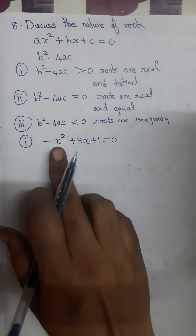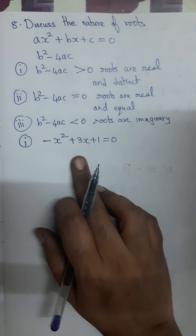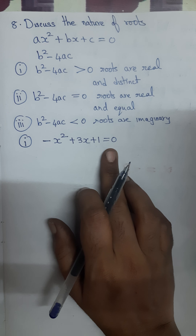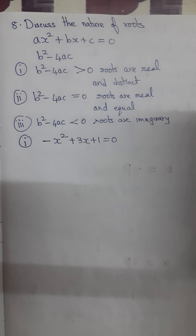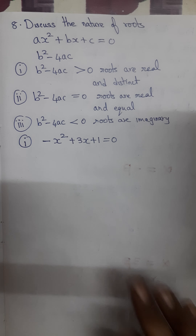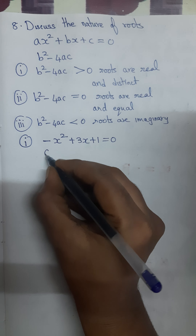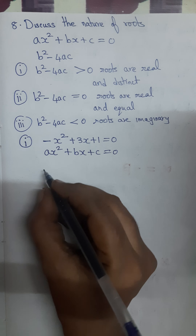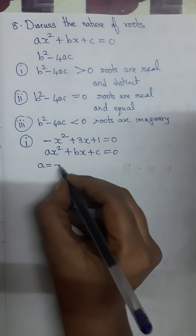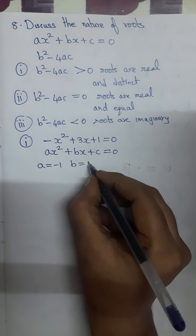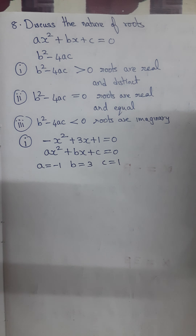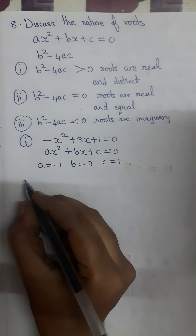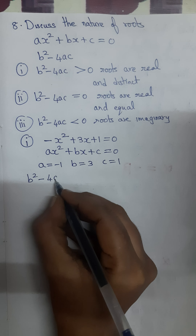The first subdivision: -x² + 3x + 1 = 0. This is the quadratic equation for which we have to find the nature of the roots. Comparing with ax² + bx + c = 0, we get a = -1, b = 3, and c = 1. Now we have to find the value of b² - 4ac.